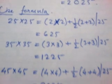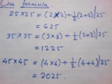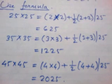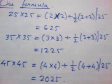Let's see another example. 45 into 45 will give us 4 into 4 plus half of 4 plus 4. That is 20, at the back 25.